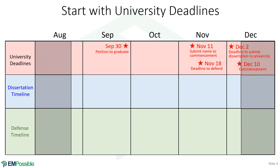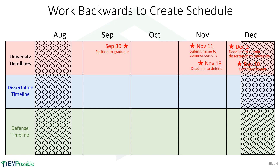Given these dates imposed by the university, what we're going to do is work backward. We'll start with December 2nd and November 18th and work backward to figure out exactly when you need to finish your dissertation and your slides for your defense.